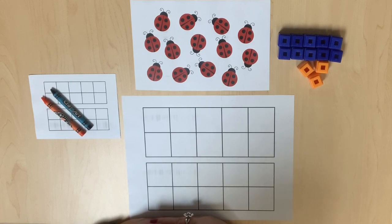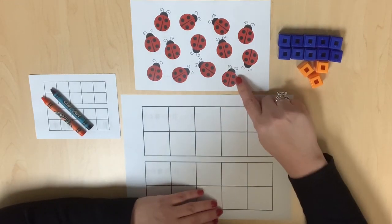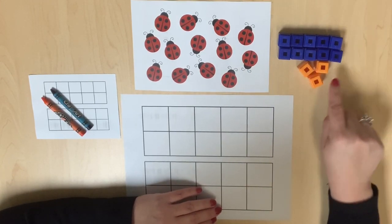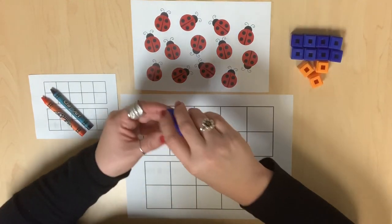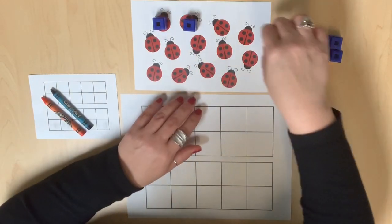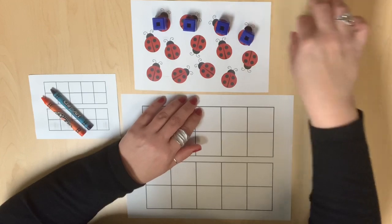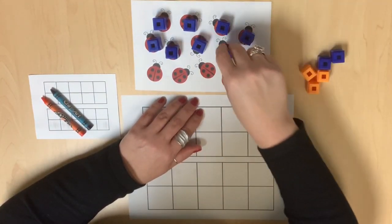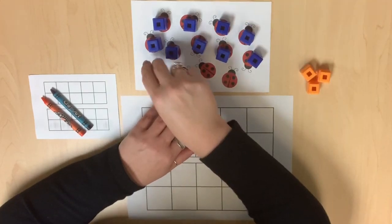Begin by presenting values from 11 to 15 in picture form. Using a picture card that represents a value such as 13, use two different colored counters to cover each object. One color will be used to count up to 10 and a second color will be used for the remaining objects.